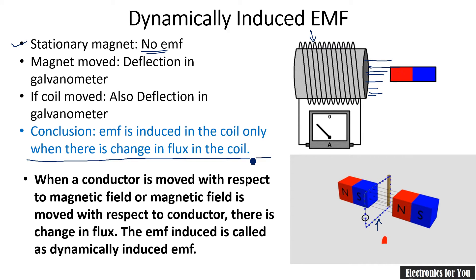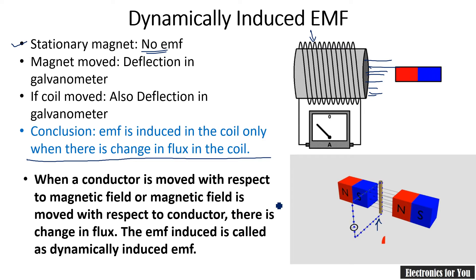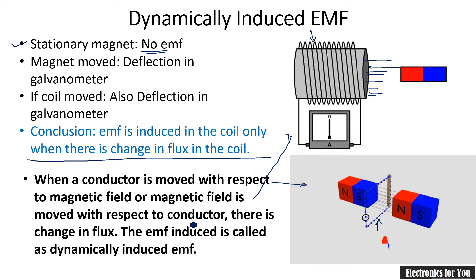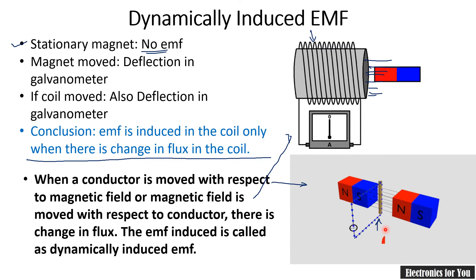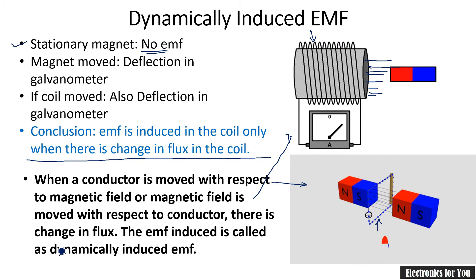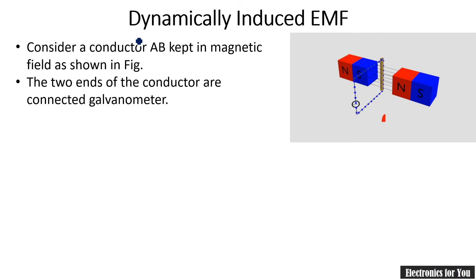This is itself known as dynamically induced EMF. When a conductor is moved with respect to a magnetic field, or a magnetic field is moved with respect to a conductor, there is a change in flux, and the EMF induced is called dynamically induced EMF — because there is movement involved, either of the magnet or the coil.